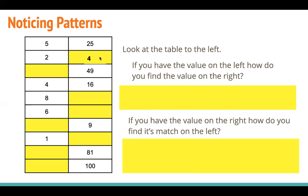For 2 on the left I would put 4 on the right. For 8, 64. For 1, 1 and then for 6, 36. So if you have the value on the left, what am I doing to find the value on the right? If you didn't already know this, this is the square. If I square the value on the left, I can get the value on the right.